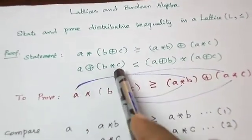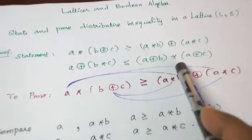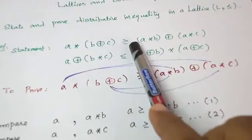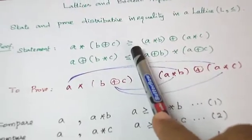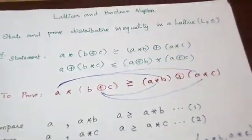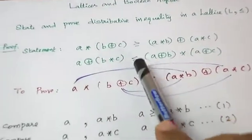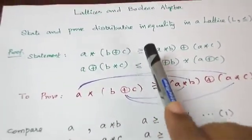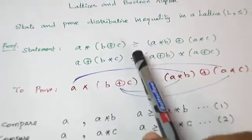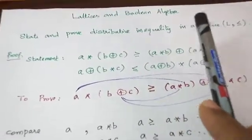Similarly, A+(B★C) is less than or equal to (A+B)★(A+C). We have to read it as related to, but here we can understand it like a less than or equal to inequality. And if equality exists for all elements A, B, C, then the lattice is called a distributive lattice.